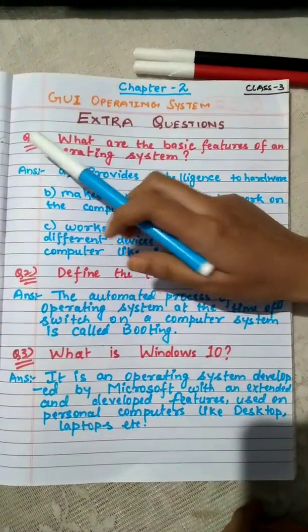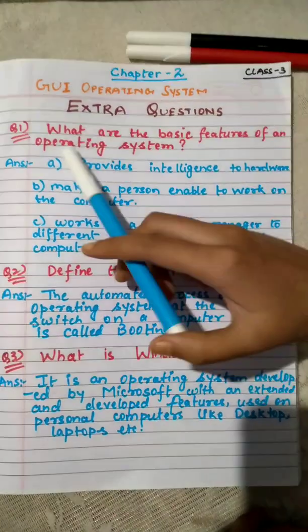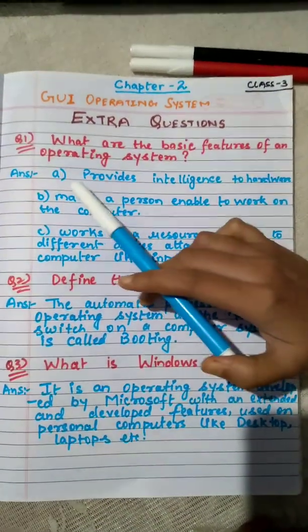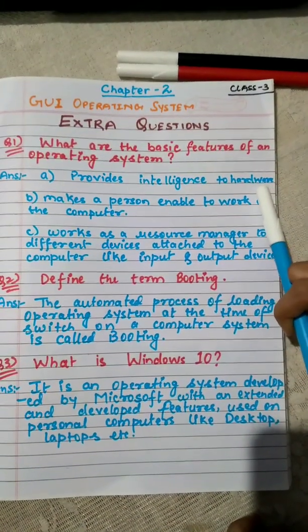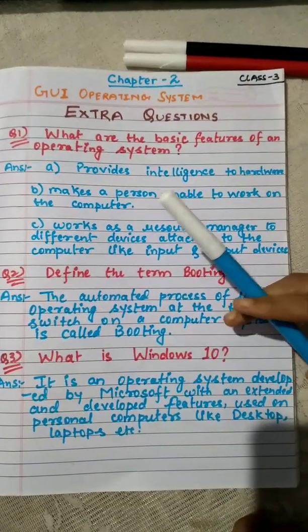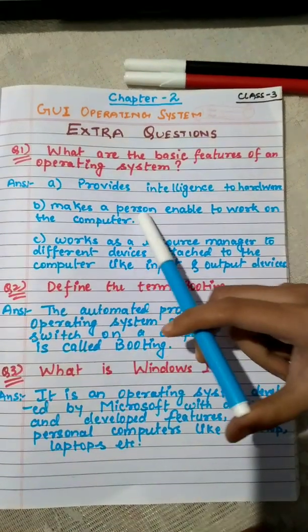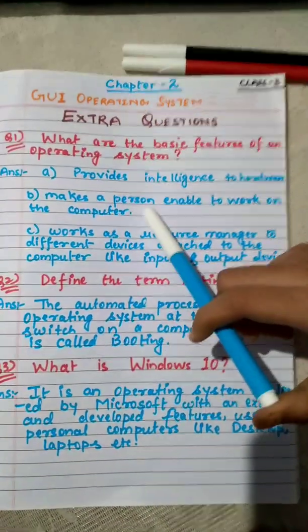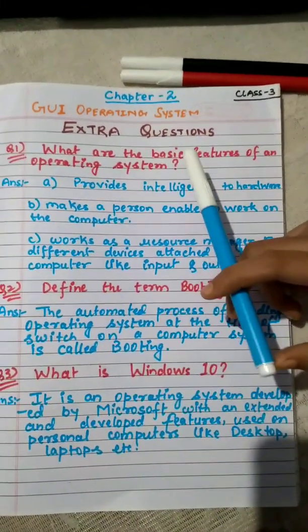First question: What are the basic features of an operating system? Point A: It provides intelligence to hardware. Operating system makes a hardware component work and makes a person able to work on a computer. It makes the computer user to work upon a computer system.